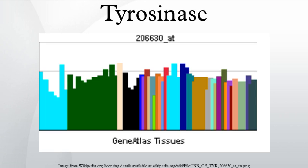Tyrosinase has a wide range of functions in insects, including wound healing, sclerotization, melanin synthesis, and parasite encapsulation. As a result, it is an important enzyme in the defensive mechanisms of insects, and some insecticides are aimed to inhibit tyrosinase.